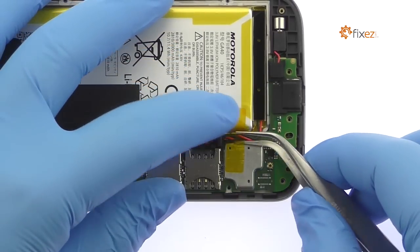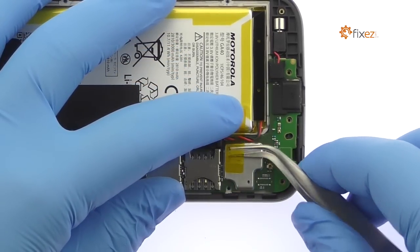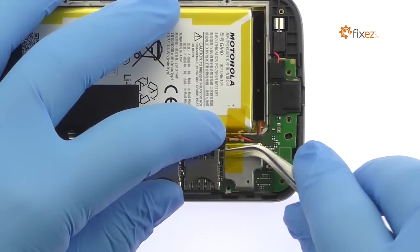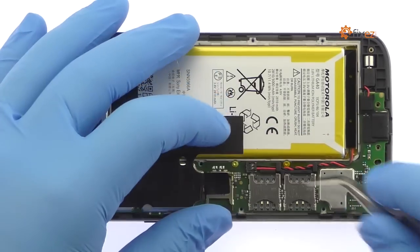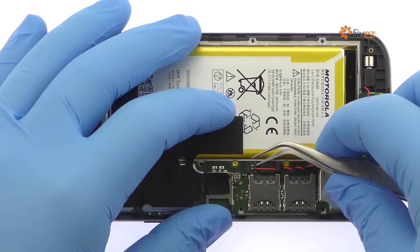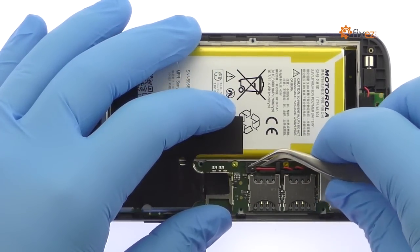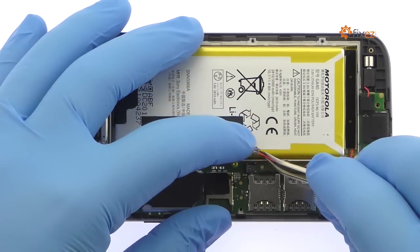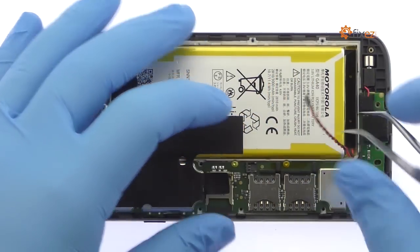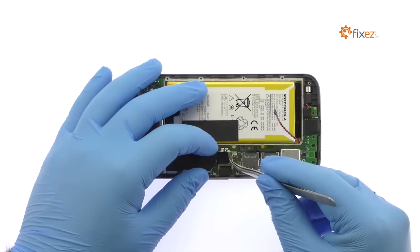Peel up the piece of Kapton tape. Disconnect the battery cable from the Moto G4 logic board. Carefully peel up the black tape.